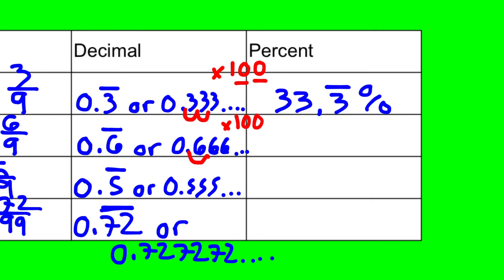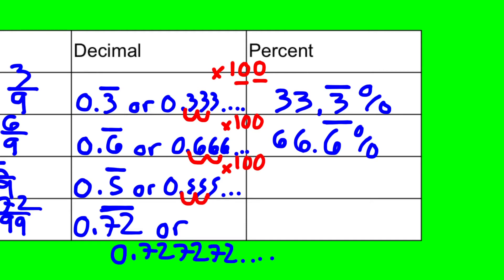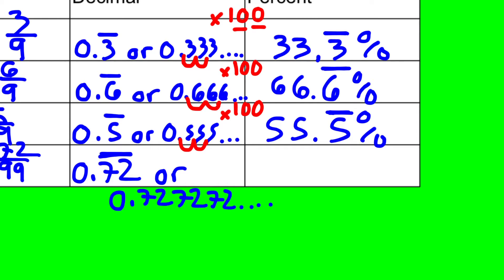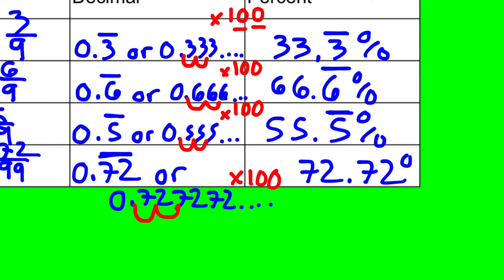It's the same thing every time — to make a decimal to a percent, mentally multiply by 100. That causes the decimal to move two spots to the right. Two-thirds gives 66 and six-tenths percent, with the six-tenths still repeating. For five-ninths, that's 55 and five-tenths percent repeating. And for 72-hundredths repeating, no matter what the decimal is, you mentally multiply by 100 and move the decimal two spots to the right — giving 72 and 72-hundredths percent, with the 72-hundredths part still repeating.